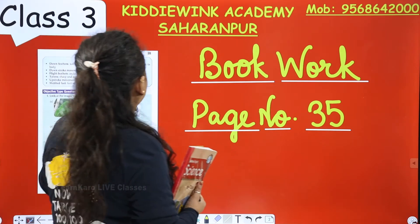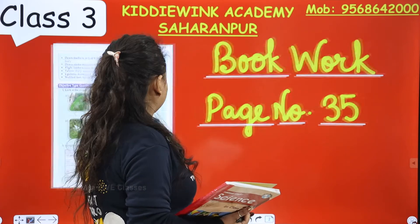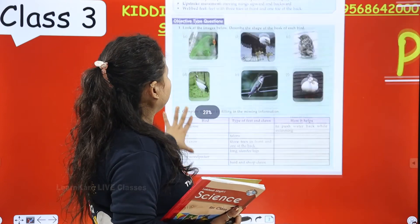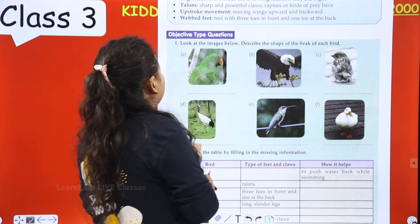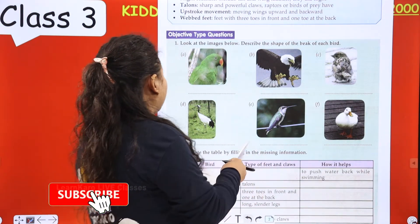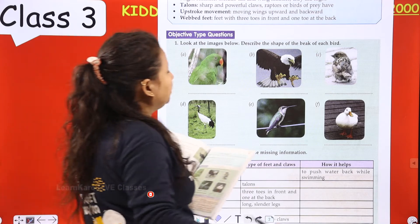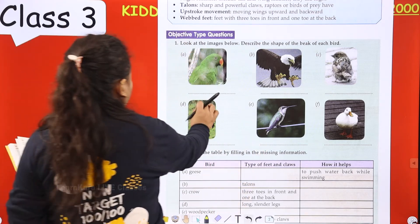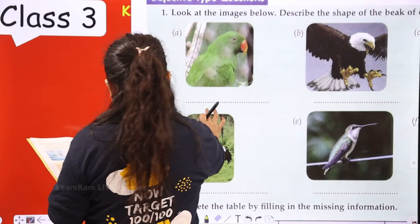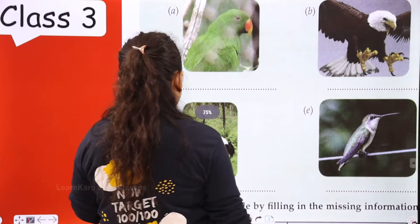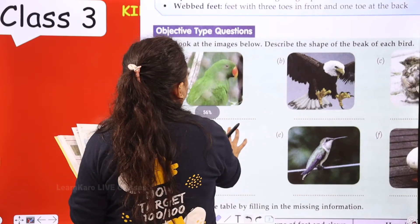Open page number 35 from your science book and bring your pencil box. Here are objective type questions. First: look at the images below and describe the shape of the beak of each bird. The first bird is a parrot. The shape of its beak is curved.